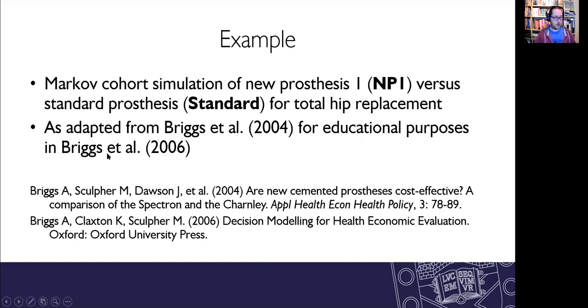So I've applied this in an example. It's an example from the Briggs et al handbook decision modeling for health economic evaluation and it's a Markov cohort simulation of prostheses for total hip replacement. So we've got a standard prosthesis and a new prosthesis which is called NP1.